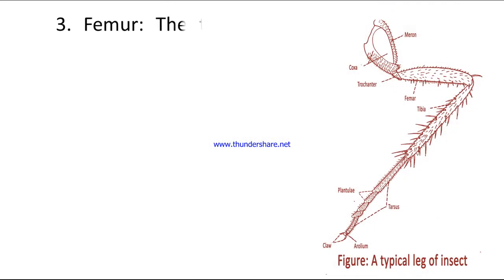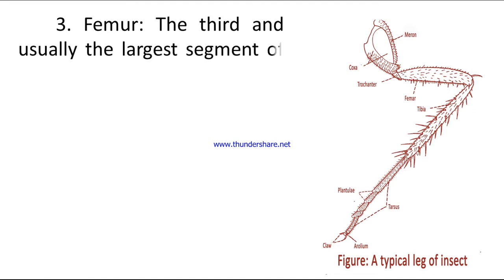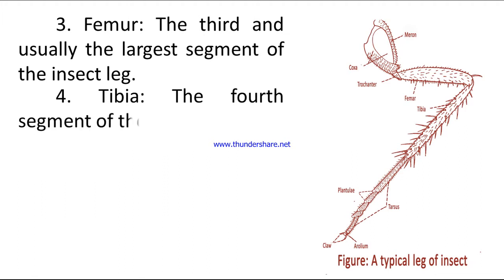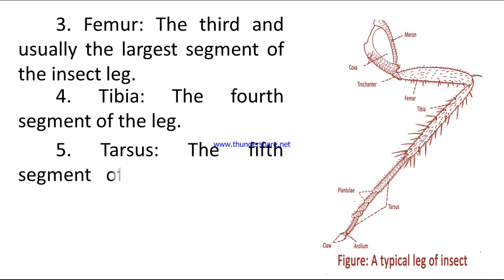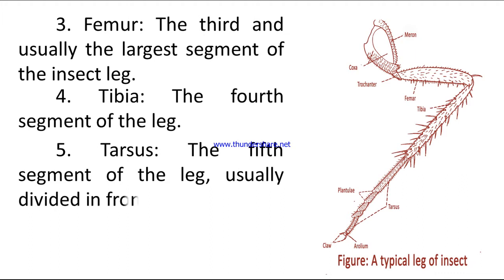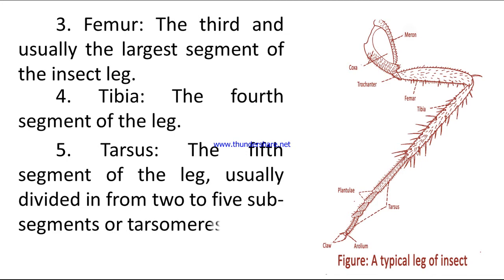Number three: femur — the third and usually the largest segment of the insect leg. Number four: tibia — the fourth segment of the leg. Number five: tarsus — the fifth segment of the leg, usually divided into two to five subsegments or tarsomeres.